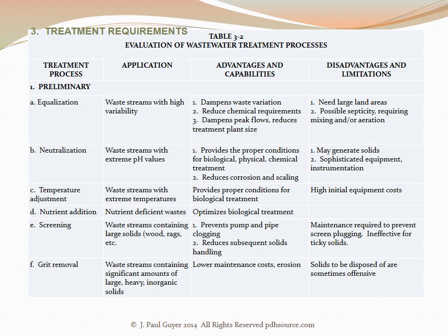The advantages and capabilities of equalization are that it dampens waste variations, reduces chemical requirements, dampens peak flows, and reduces treatment plant size. The disadvantages are that it needs a large land area and there is possible septicity requiring mixing and/or aeration. The second preliminary treatment process is neutralization, its application being to waste streams with extreme pH values. The advantages and capabilities are that it provides the proper conditions for biological, physical, and chemical treatment and it reduces corrosion and scaling. The disadvantages are that it may generate solids which will have to be removed and it requires sophisticated equipment and instrumentation.